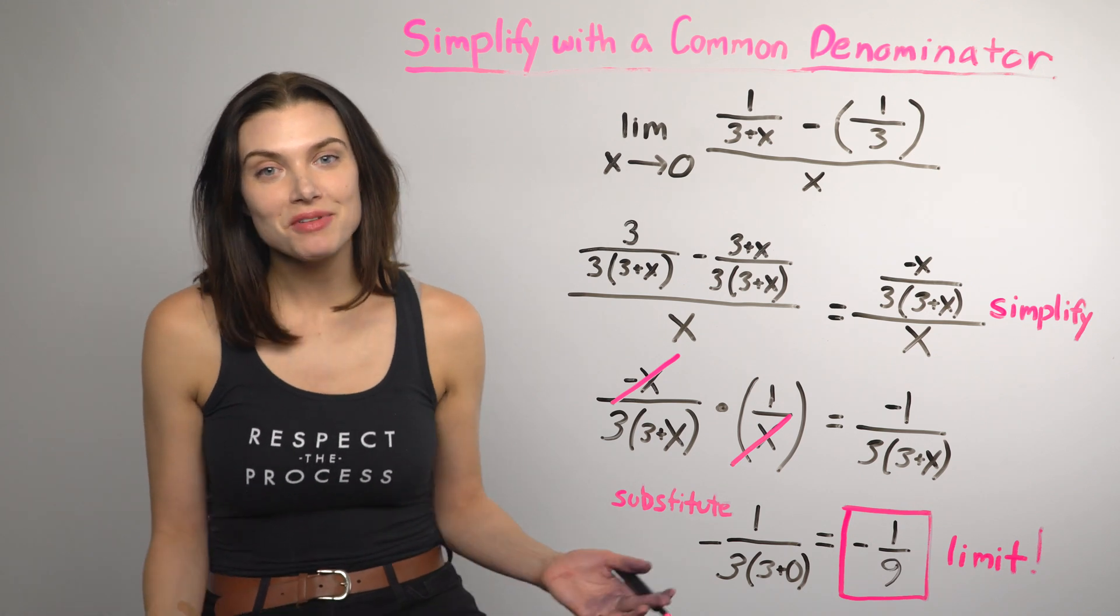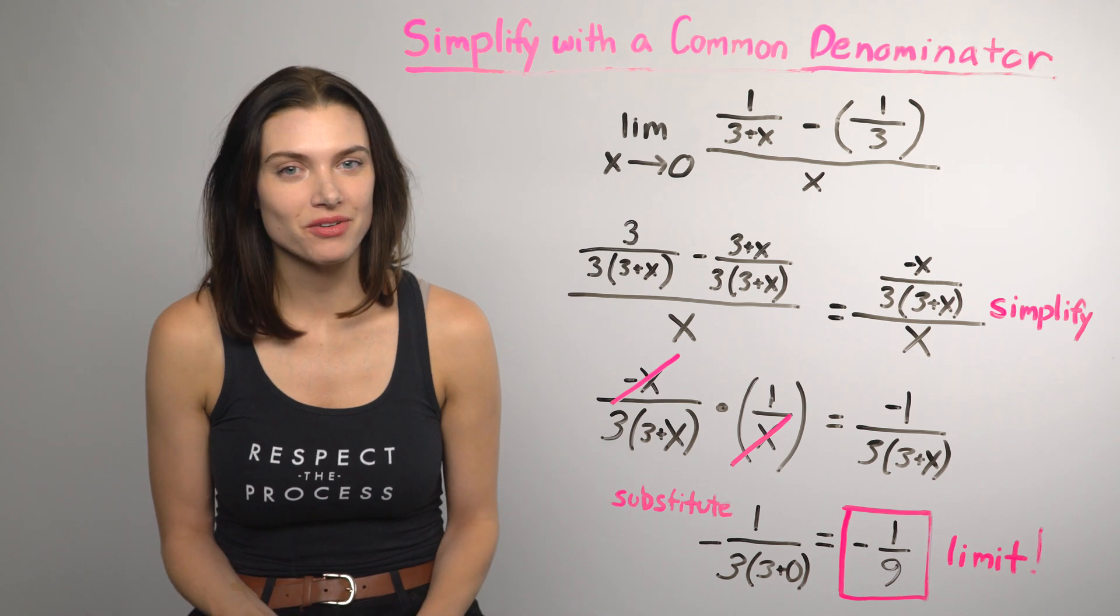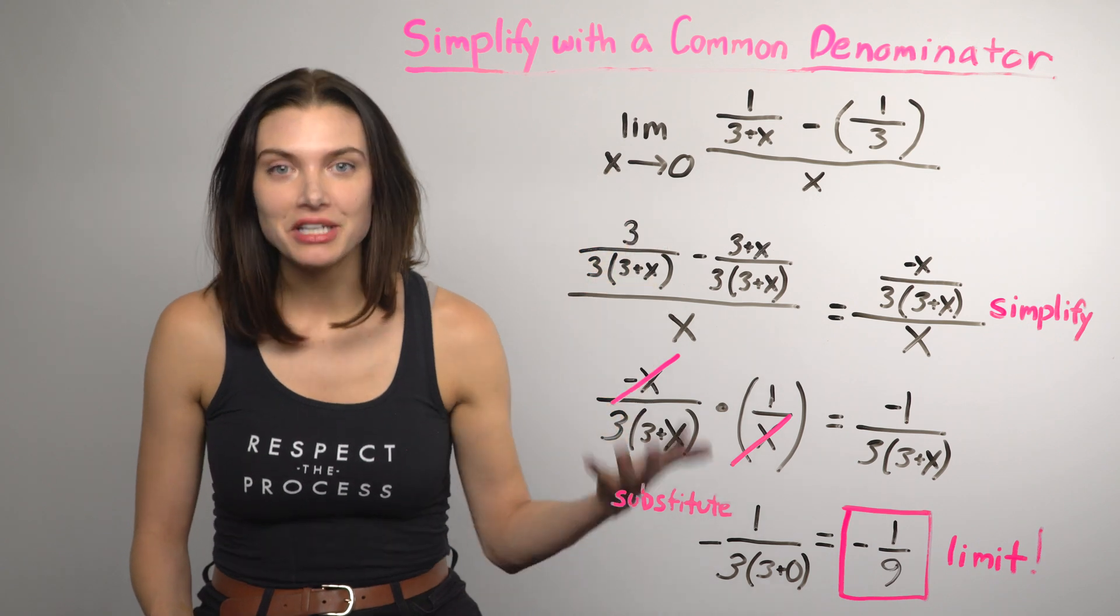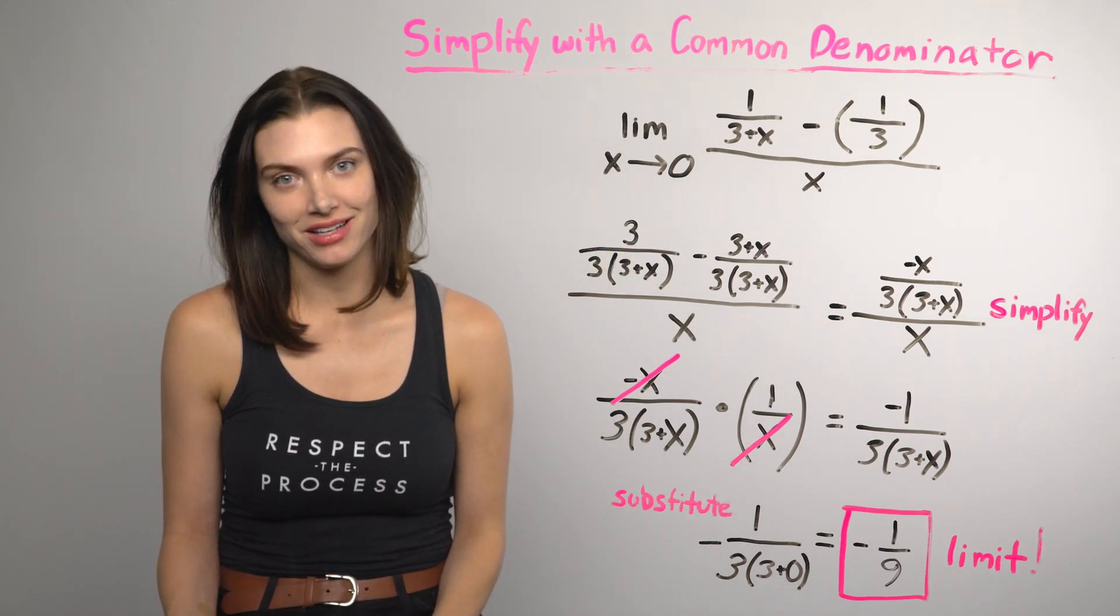And with a little simplifying, it works! The limit as x approaches 0 of this function is negative 1 over 9. Now take a sigh of relief. We got through the worst cases of finding limits algebraically.